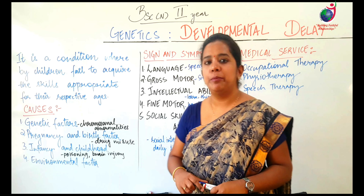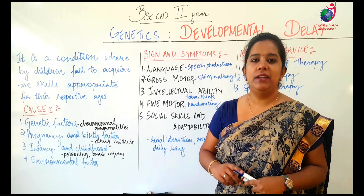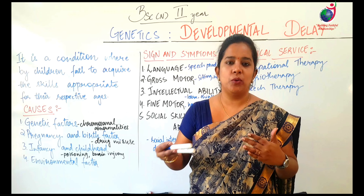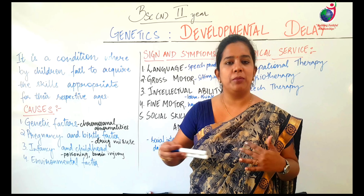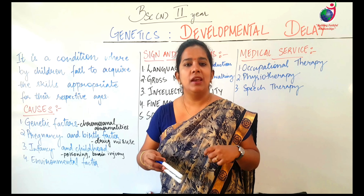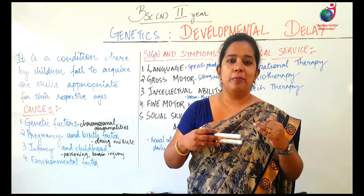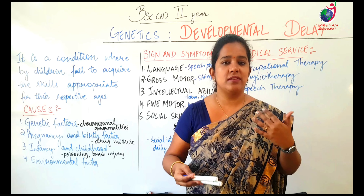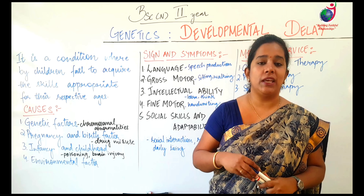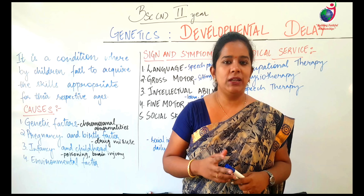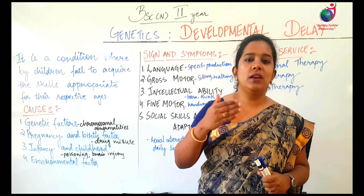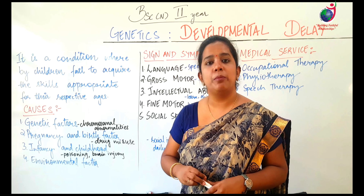Today our topic is Developmental Delay. We see children with ages one year complete, two year complete, three year complete. When we reach a milestone, normally a child should be trying to walk, trying to recognize things, or the face of the mother or father, talking, babbling — all these abilities are normally seen at one milestone for children. If they don't develop, then we say Developmental Delay.